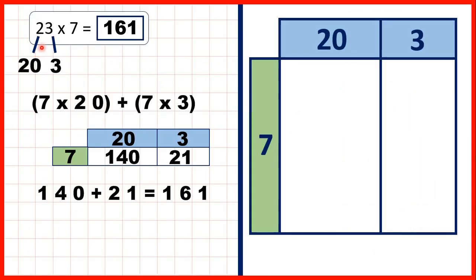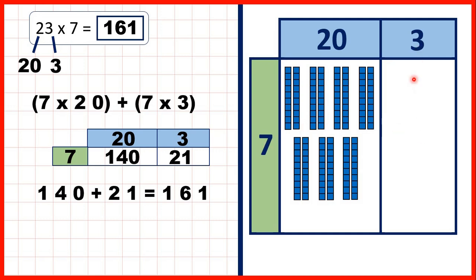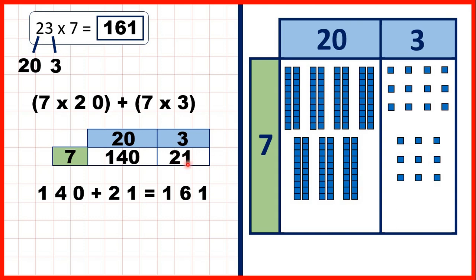Then, the other question we looked at was 23 times 7. So we wrote 7 on the left of our grid, and then 20 and 3 on top. To show 7 times 20, we can show 20 seven times. That gives us 14 tens, which is the same as 140. Then for this box here, we can show 7 times 3 — so 3 seven times — and that gives us 21. And putting what we have together gives us 161.